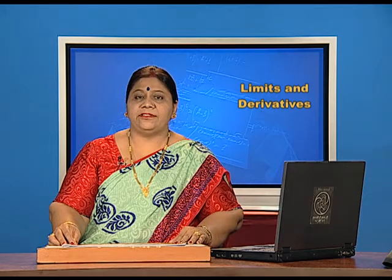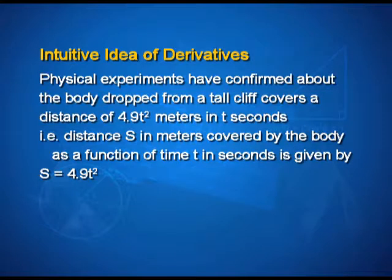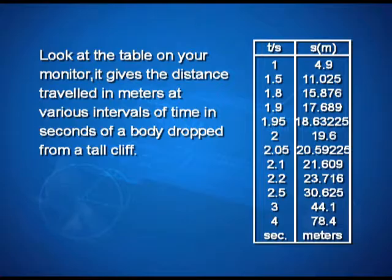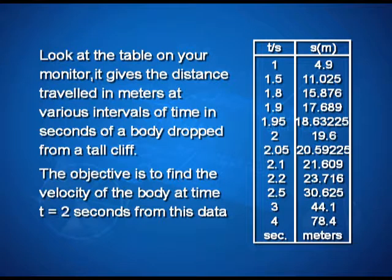Now let us have some intuitive idea of derivatives. Physical experiments have confirmed that a body dropped from a tall cliff covers a distance of 4.9 t-squared meters in t seconds. That is, distance s in meters covered by the body as a function of time t in seconds is given by s = 4.9t². Look at the table on your monitor. It gives the distance traveled in meters at various intervals of time in seconds of a body dropped from a tall cliff. The objective is to find the velocity of the body at time t = 2 seconds from this data.